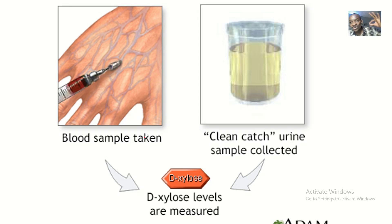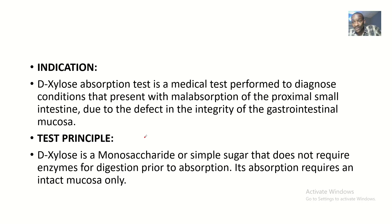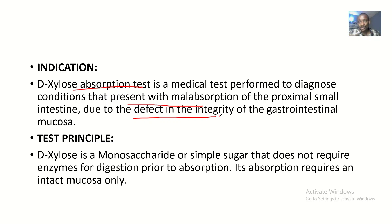The xylose absorption test involves xylose, which is a simple monosaccharide — essentially a simple sugar. Because it is a simple monosaccharide, it does not need enzymes to break it down. It just needs the integrity of your intestines to be intact. The xylose absorption test is a medical test performed to diagnose conditions presenting with malabsorption in the proximal small intestine due to a defect in the integrity of the gastrointestinal mucosa.